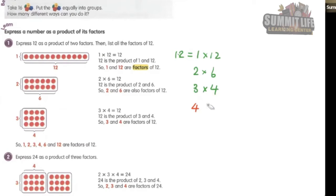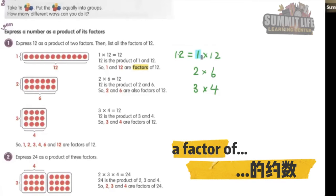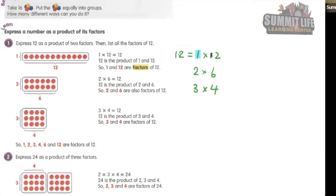Because after three it goes to four — it is just repeating what we have here. We call number one a factor of 12. We call 12 a factor of 12. We call two a factor of 12. We call six a factor of 12. We call three a factor of 12. We call four a factor of 12.